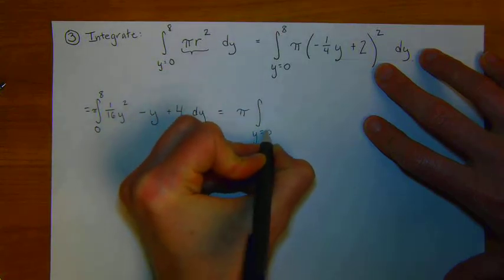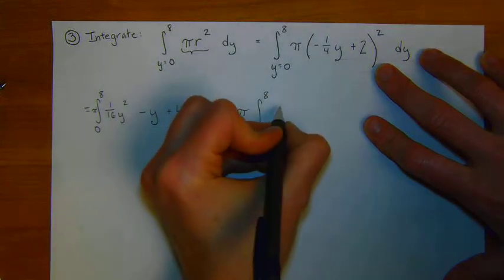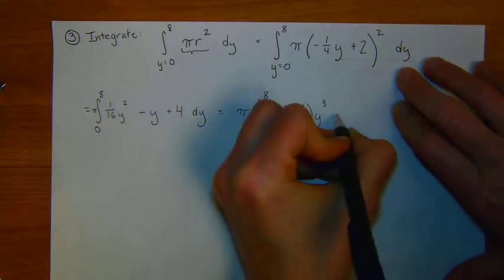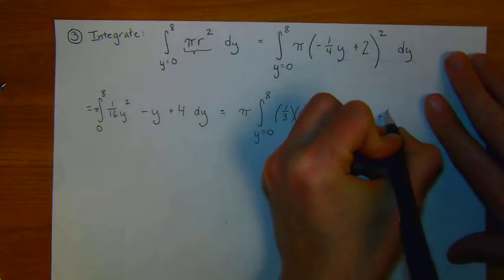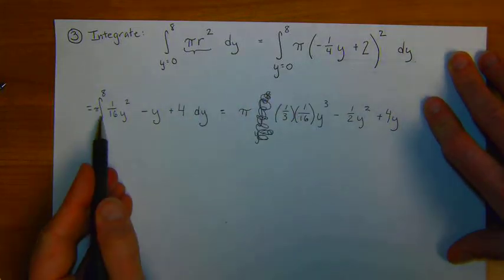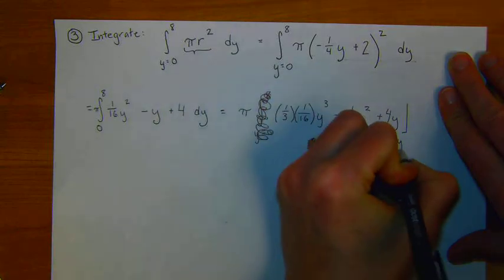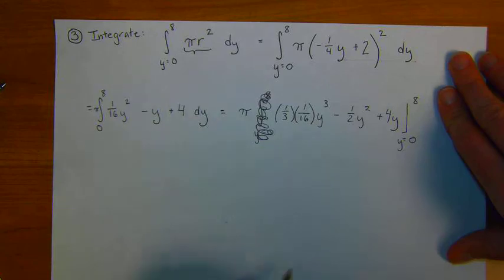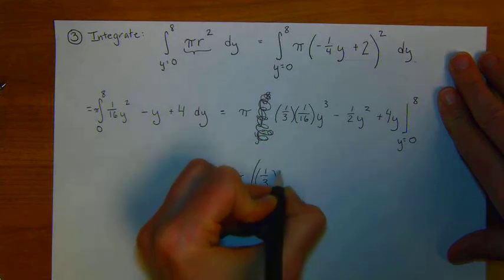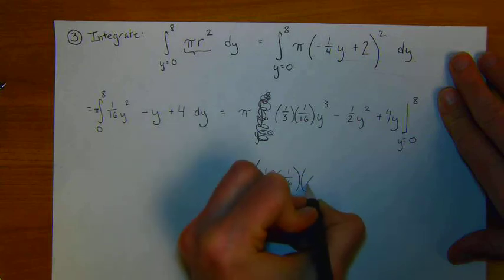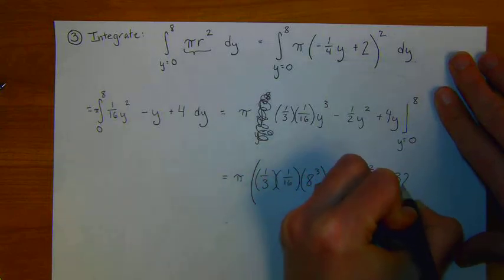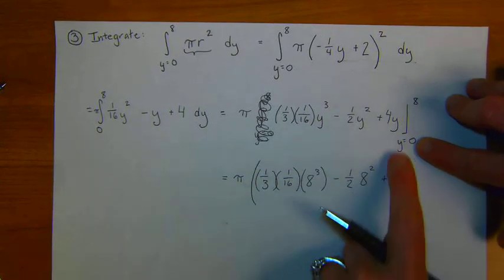Next, I do my integration step. Pi times the integral as y goes from 0 to 8. So I'm going to take the integral: 1/3 times 1/16 y cubed minus 1/2 y squared plus 4y, evaluated from y equals 0 to y equals 8. This becomes pi times 1/3 times 1/16 times 8 cubed minus 1/2 times 8 squared plus 4 times 8, which is 32, minus the lower bound. But in this case, subtracting out that lower bound is just 0.